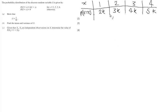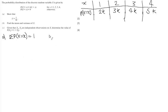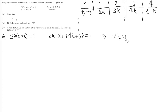I'll extend the table so we can put the probabilities underneath. To show that k = 1/14, I use the fact that the sum of all probabilities equals 1. So: 2k + 3k + 4k + 5k = 1. Totalling this up gives 14k = 1, and therefore k = 1/14.